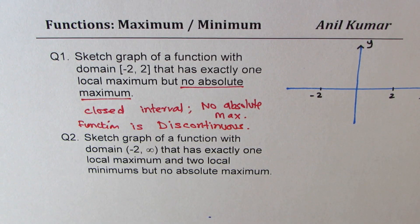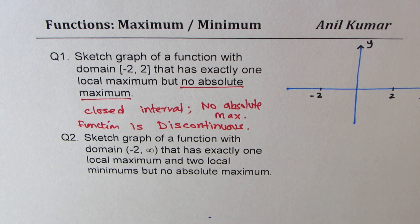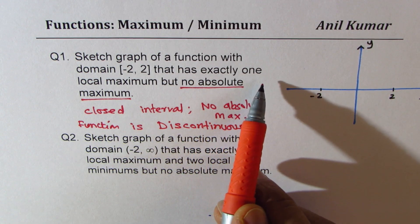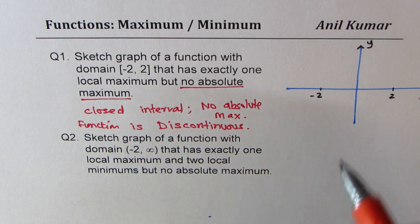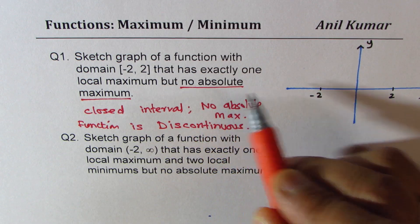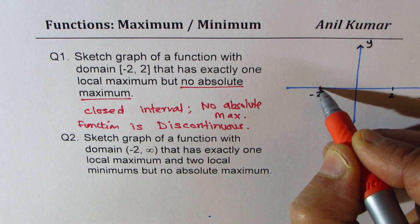That is important to understand. So now I think it'd be much simpler for us to sketch the graph. The function is discontinuous. Now that has exactly one local maxima, so we need one local maxima but no absolute minimum. So we can start from here for example.